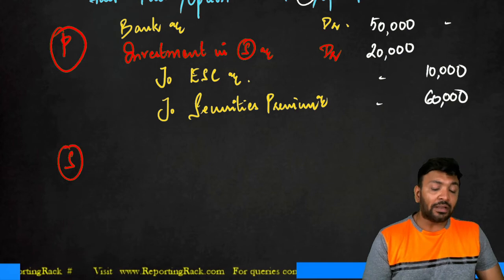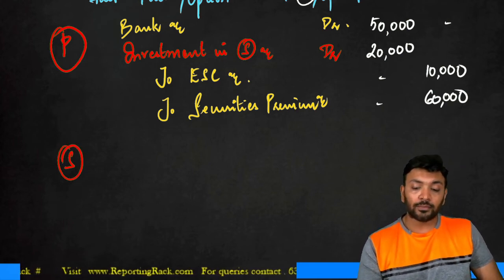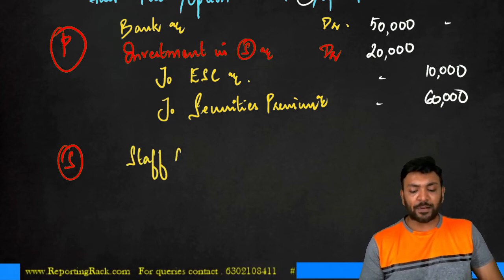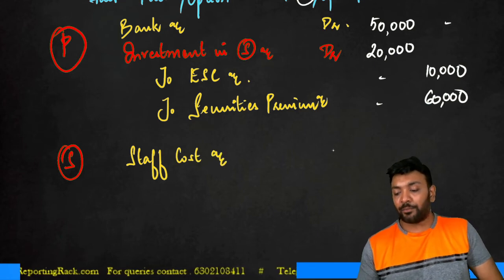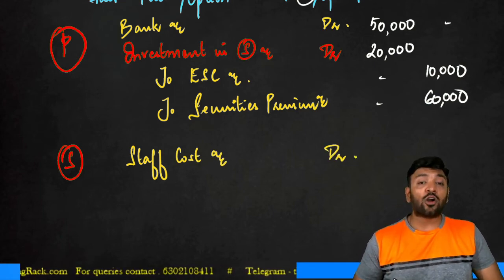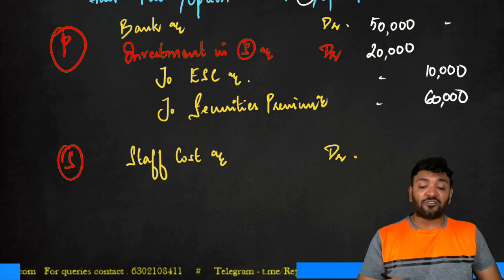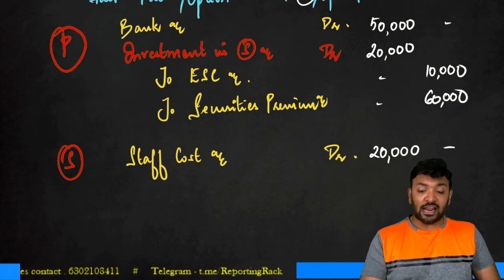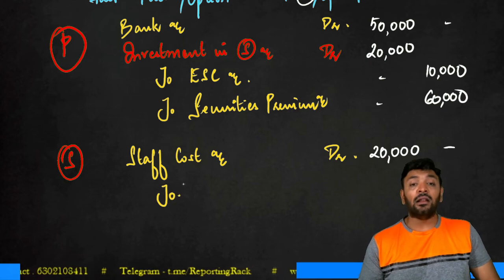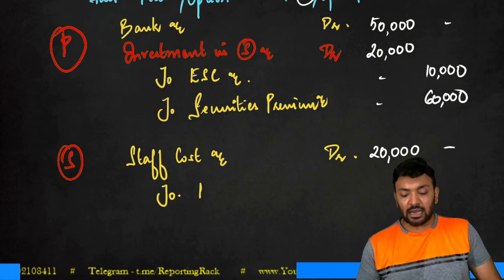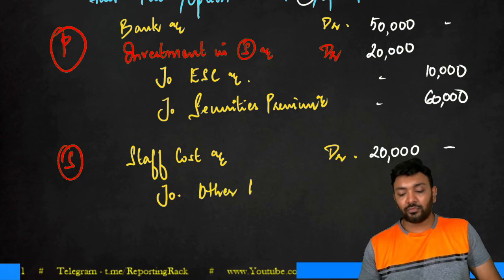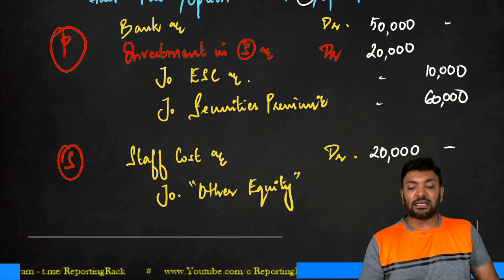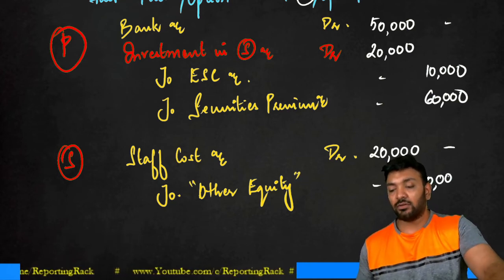Similarly, what will S Limited record? S Limited will record staff cost or your employee benefit expense account debit. How much will they record? The staff cost is to the extent of the fair value of option, that is 20,000. But they did not issue the share, so you cannot credit your share capital. Therefore, I will present it as other equity. In other equity, I will present it, and the value to be presented in other equity is 20,000.